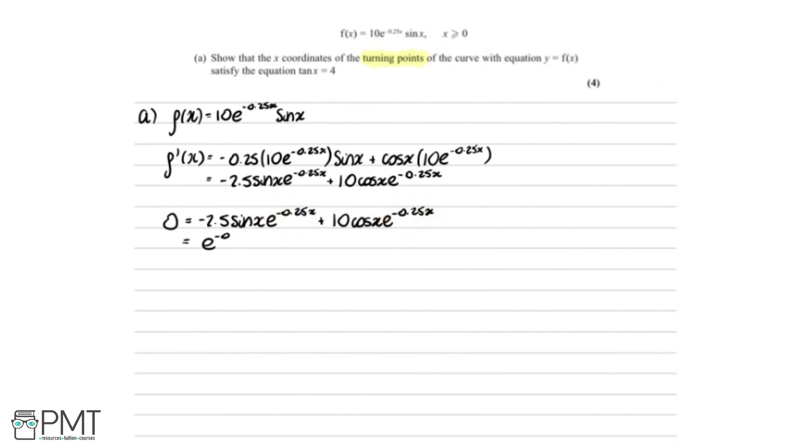So doing that, we get e^(-0.25x) multiplied by minus 2.5 sin x plus 10 cos x. So therefore, we know that e^(-0.25x) equals 0, or minus 2.5 sin x plus 10 cos x equals 0.